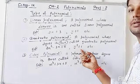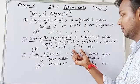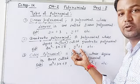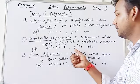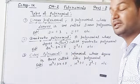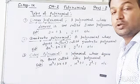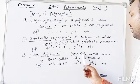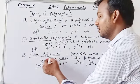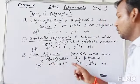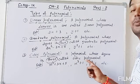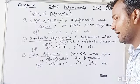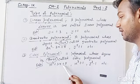Similarly, y² + 1 is also an example of a quadratic polynomial because its degree is 2. The third type is a cubic polynomial — a polynomial whose degree is 3 is called a cubic polynomial. An example is x³ + 3x + 5.